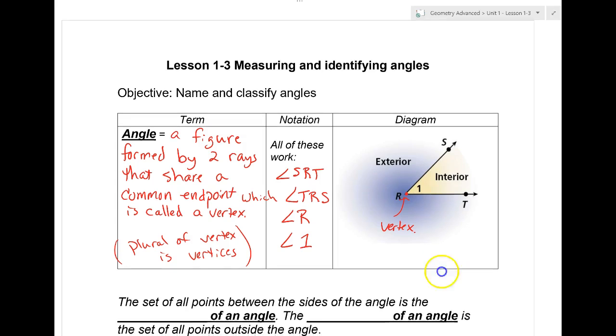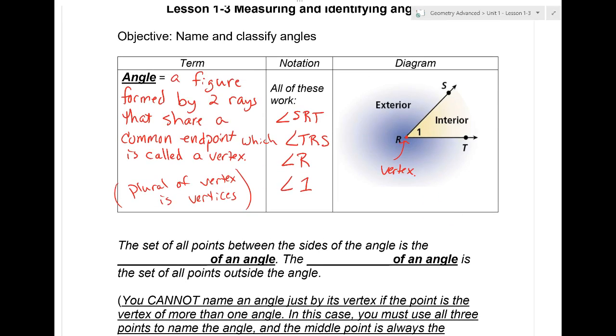There's a few other things you just need to know. You see the kind of the tan area right there? Anything in between the sides of your angle, that's going to be called the interior. So we have interior of angles. And then anything that we'd say in the blue, all those points out there that are blue, those are called the exterior. And why do we do that? Just so we can describe stuff better.